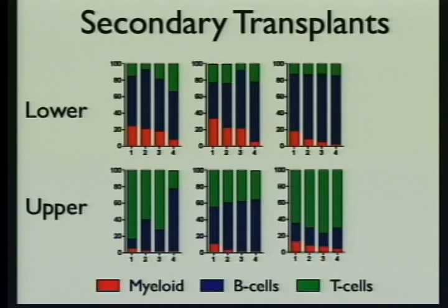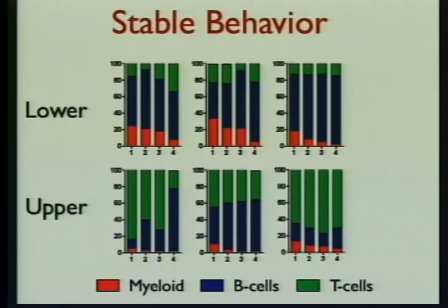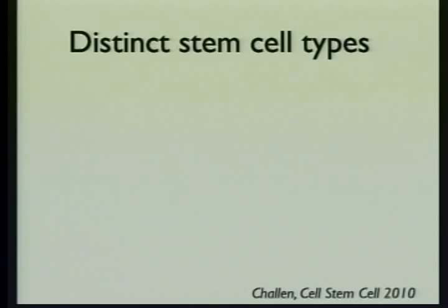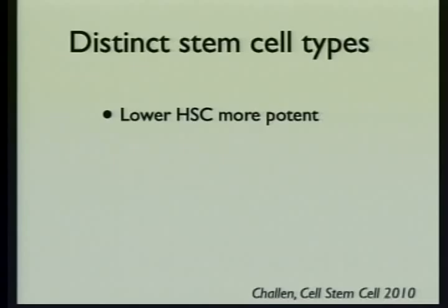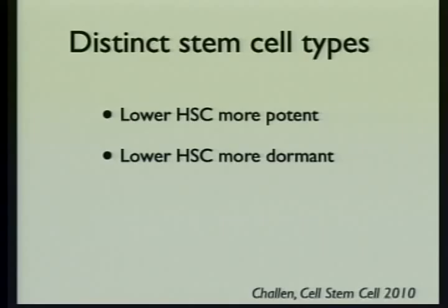We see these differences in the blood of transplanted mice the first time, but we also took bone marrow from those mice and transplanted it into a second round of recipients to test whether they still had those properties. Again, the cells from the lower region — those that absorbed less dye — had more myeloid activity, more red cell production, while cells from the upper region had more ability to make T cells. This behavior is very stable; it seems to be an inherent property of the stem cells. It's not something that changes or evolves over time.